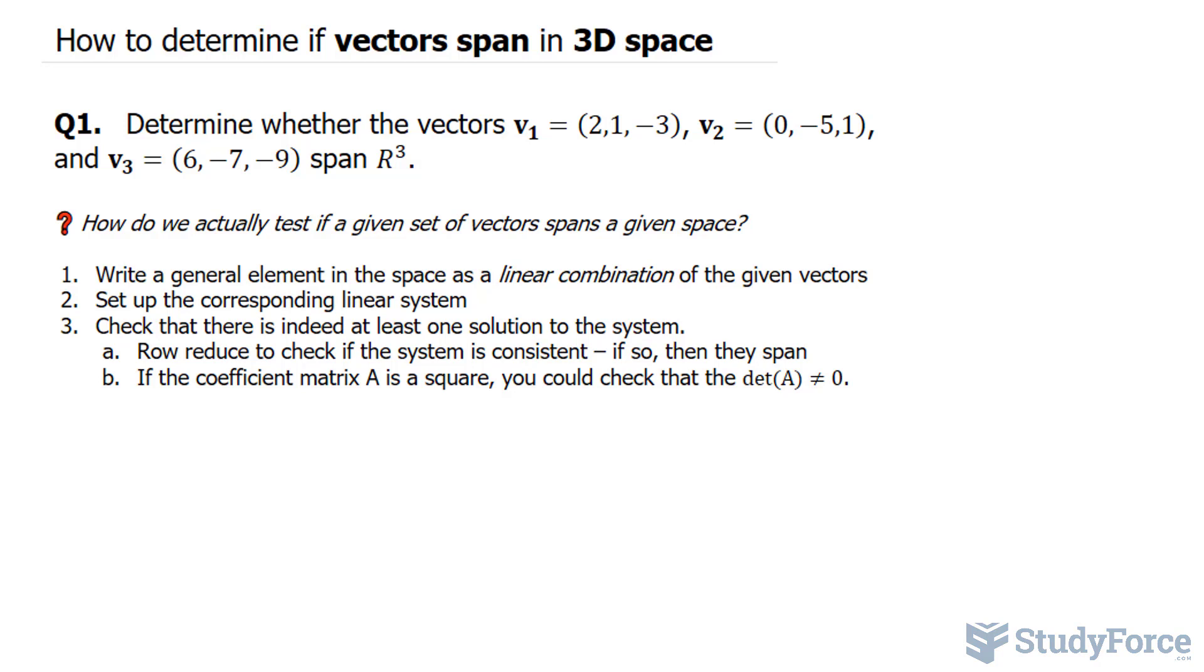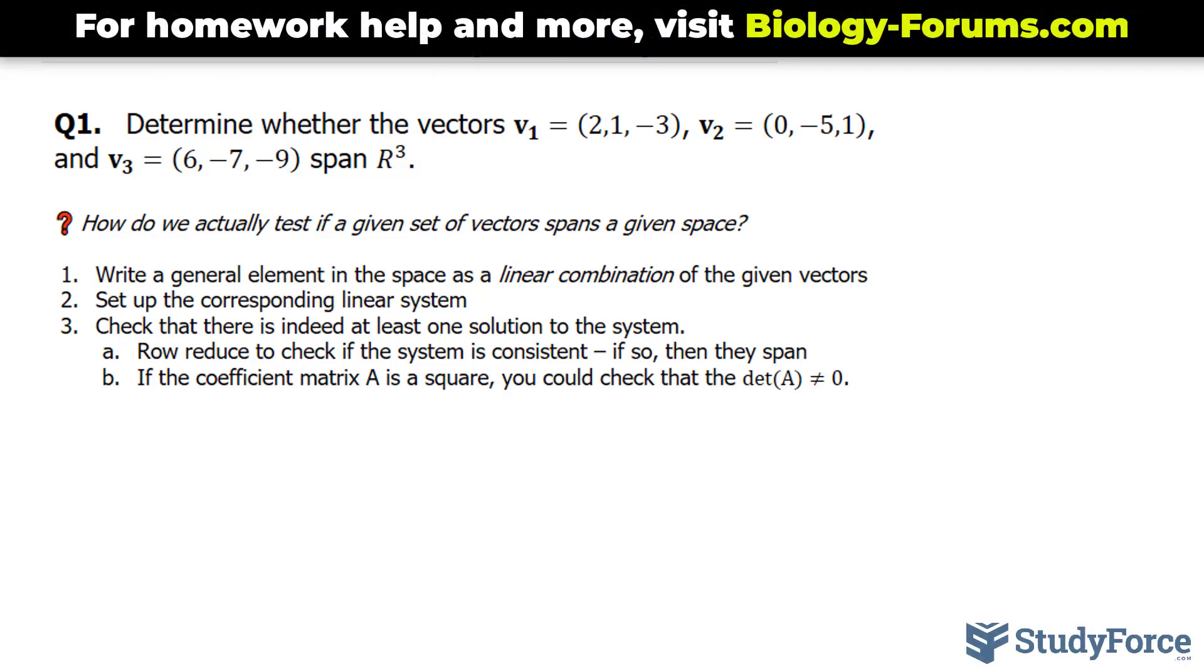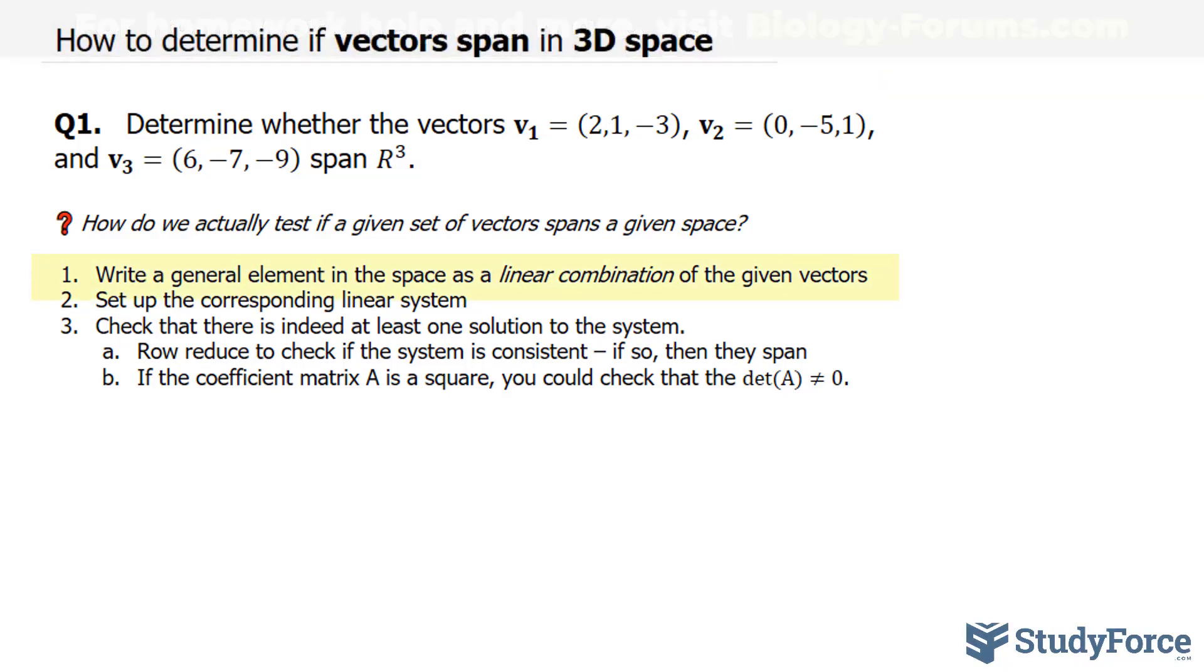Before we begin, let's discuss how we can actually test if a given set of vectors spans a given space. And it's three simple steps. The first thing that you have to do is write a general element in the space as a linear combination of the given vectors. I'll show you what I mean by that in a moment. Number two, set up the corresponding linear system. And number three,